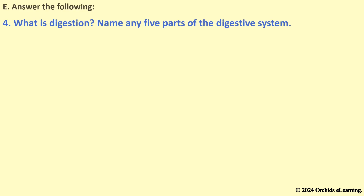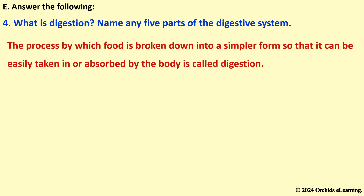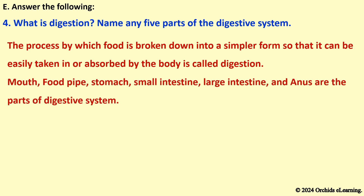What is digestion? Name any five parts of the digestive system. The process by which food is broken down into a simpler form so that it can be easily absorbed by the body is called digestion. Mouth, food pipe, stomach, small intestine, large intestine, and anus are the parts of the digestive system.